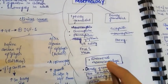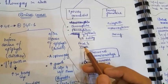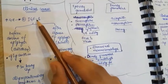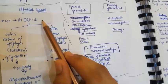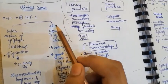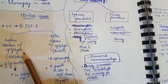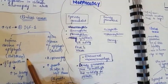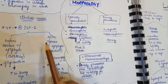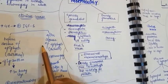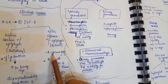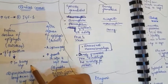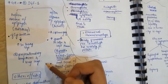In the clinical course of somatotroph adenomas, excess growth hormone stimulates insulin-like growth factor 1 (IGF-1). IGF-1 acts on bones. If it acts before closure of the epiphysis in children, it will cause gigantism. If it acts after closure of the epiphysis in adults, it will cause acromegaly. Gigantism results in increased body size with disproportionately long arms and legs.